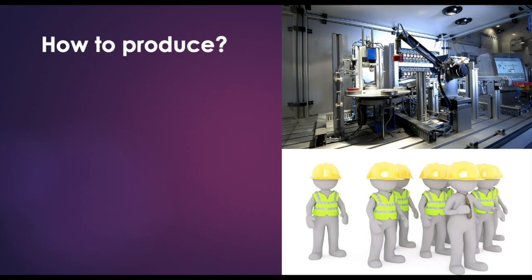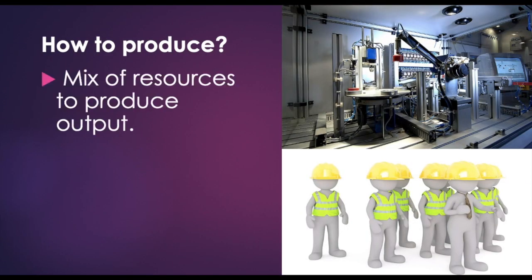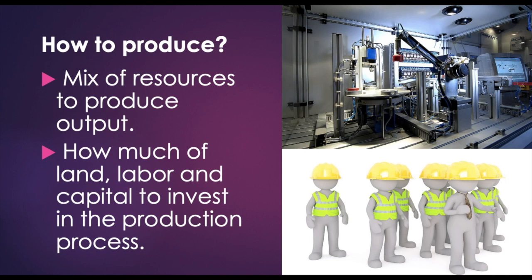The second question is: how to produce? This is where producers have to decide the mix of resources to produce that output. Because resources are scarce, how do we allocate them such that we get the most output or the most outcome? So, how much of land, how much of labour, and how much of capital to invest, and in what proportion, so that the output or outcome is going to be the maximum.